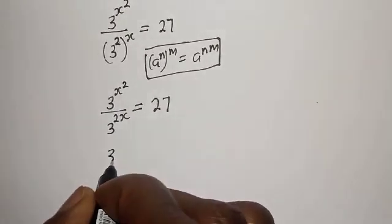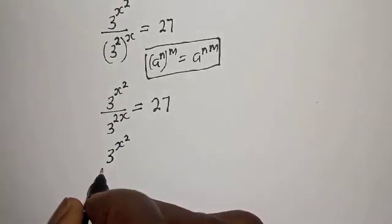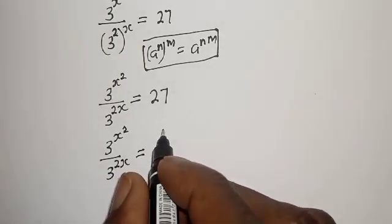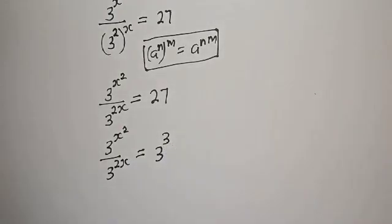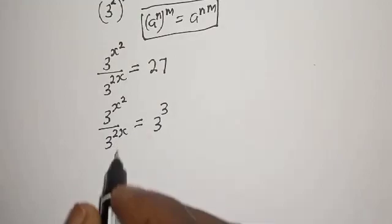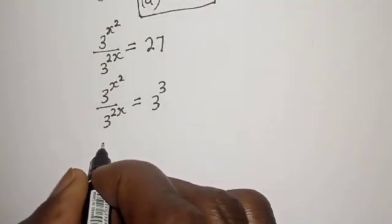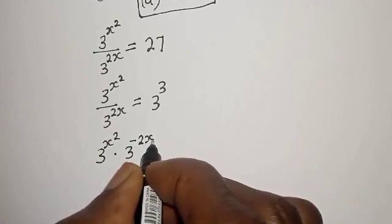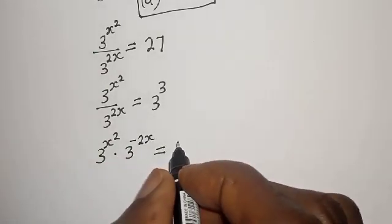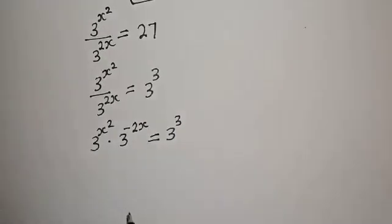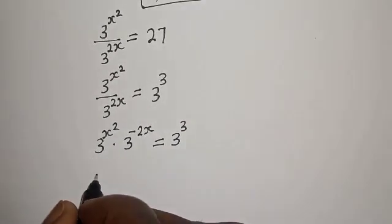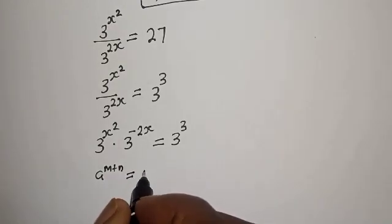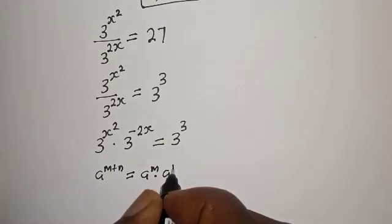Then 3 raised to power s squared divided by 3 raised to power 2s is equal to 27. This can be written as 3 raised to power 3. Now, 3 raised to power s squared multiplied by 3 raised to power minus 2x is equal to 3 raised to power 3. Also take note that if you have a raised to power m plus n, this is equal to a raised to power m multiplied by a raised to power n.